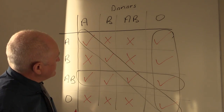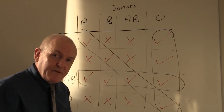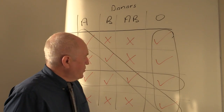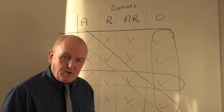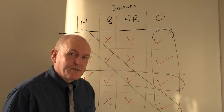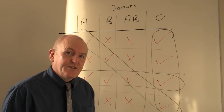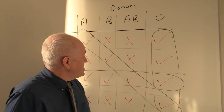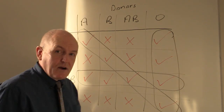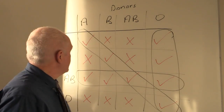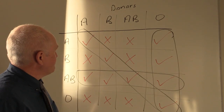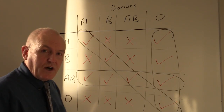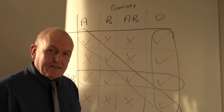We would only use this type of thinking clinically in an absolute emergency. Normally the hematology laboratories will check for many different blood groupings in addition to the ABO Rhesus system. But this shows where you'll get the ABO hemolytic type mismatch reactions and which transfusions are theoretically acceptable.